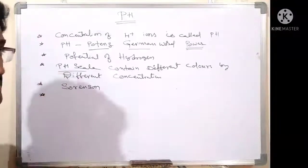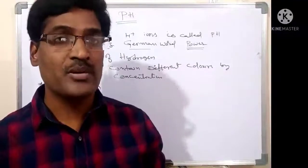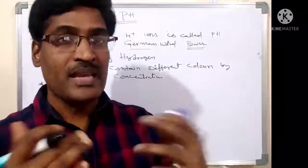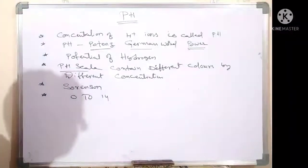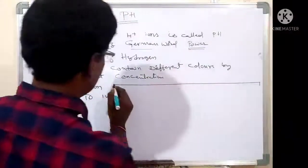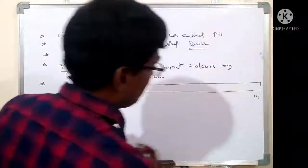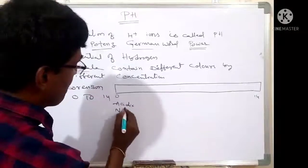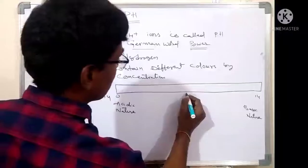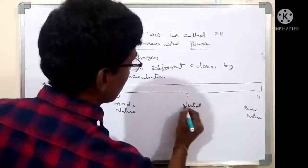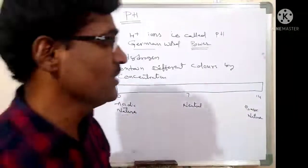Whether a substance is acidic or basic in nature we can find with the help of indicators, but the pH scale gives more information. The scale has values from 0 to 14. The value 7 is neutral; values less than 7 are acidic in nature; values more than 7 are basic in nature.